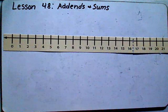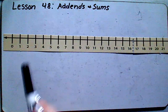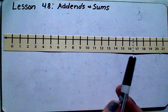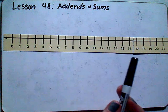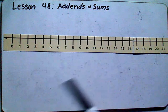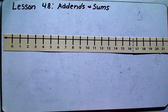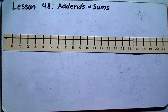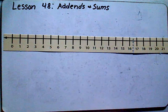So we know that we can count forwards by ones or backwards by ones up to the number twenty. Next, let's go ahead and practice counting by twos.